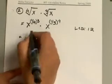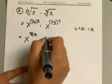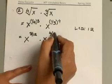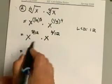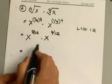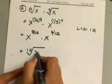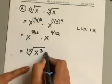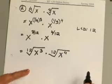And let's see, I will end up with 3/12 on the first x and 4/12 on the second one. Now again, we'll go back and rewrite these as radicals. So 12th root of x to the 3rd times 12th root of x to the 4th.